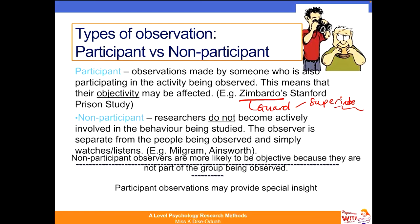Non-participant observation is where researchers do not become actively involved in the behaviour being studied. The observer is separate from the people being observed and simply watches or listens. Examples of this may include Milgram and Ainsworth's research.